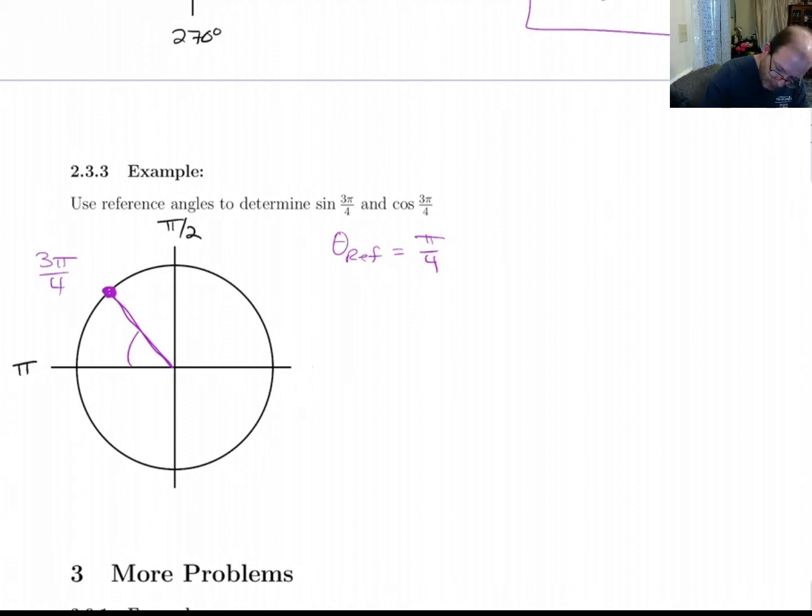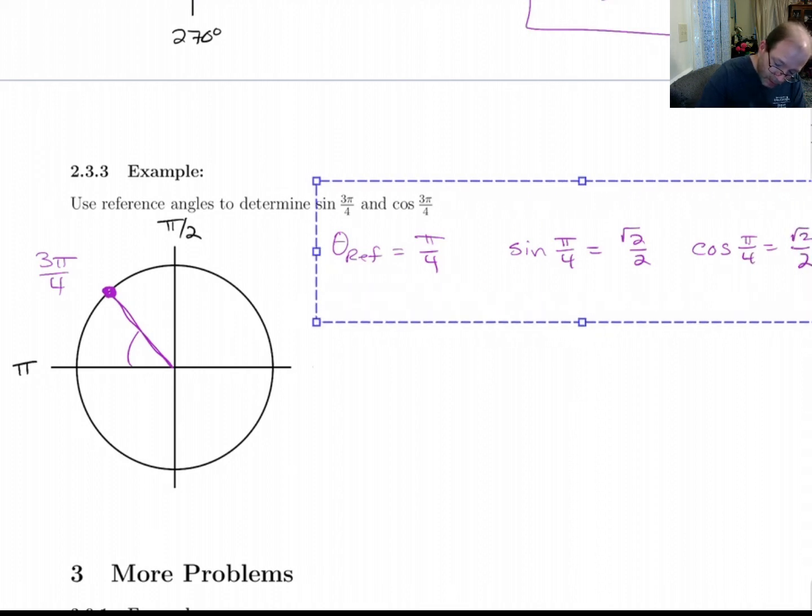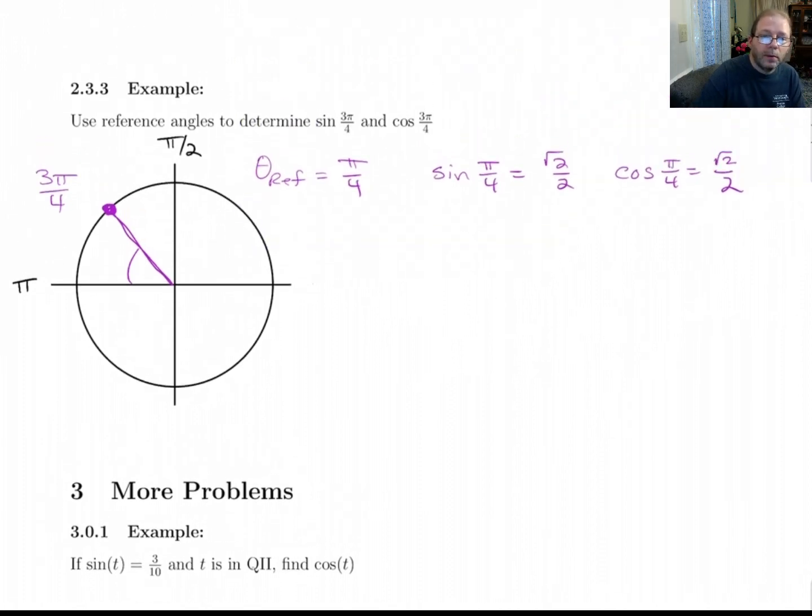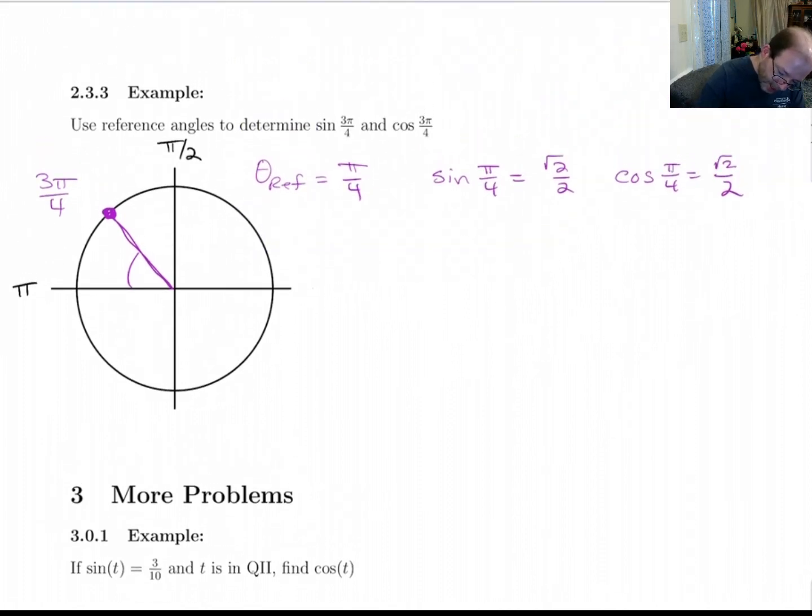So let's see. Sine of pi over 4 is root 2 over 2. Cosine of pi over 4 is also root 2 over 2. I'm going to draw my ASTC chart.